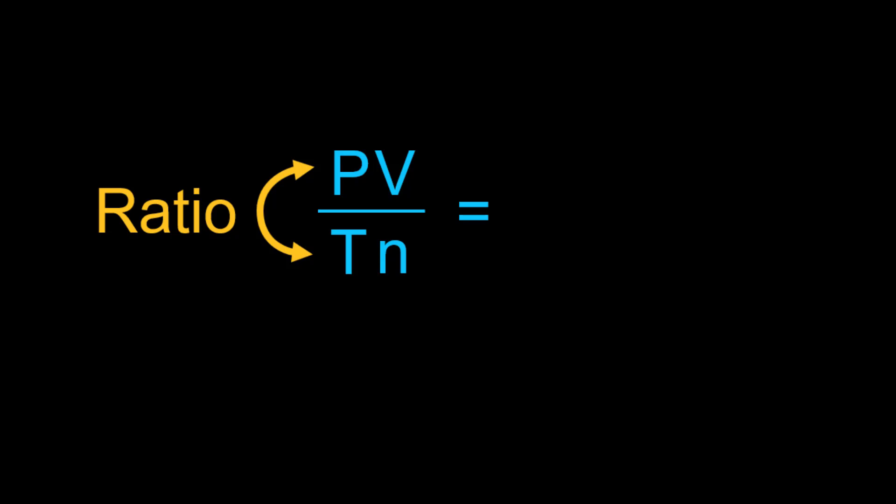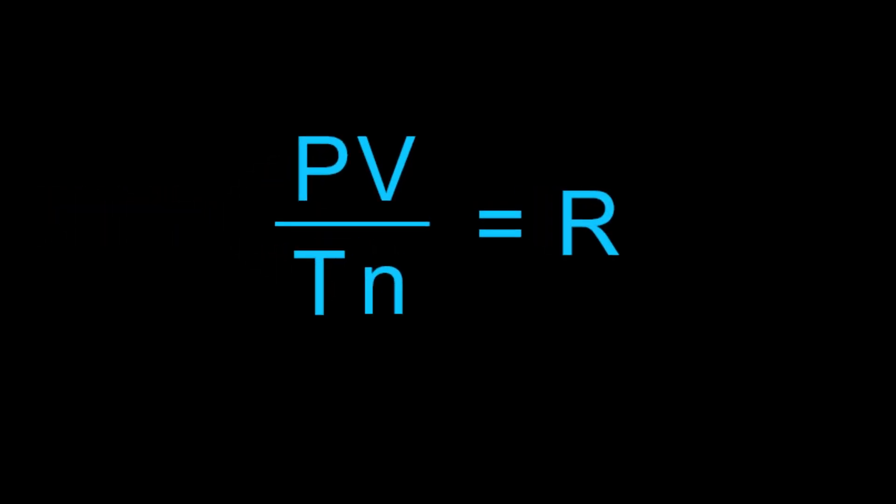We give that constant a symbol, which is R. PV over TN of any gas under ideal conditions will always be R.